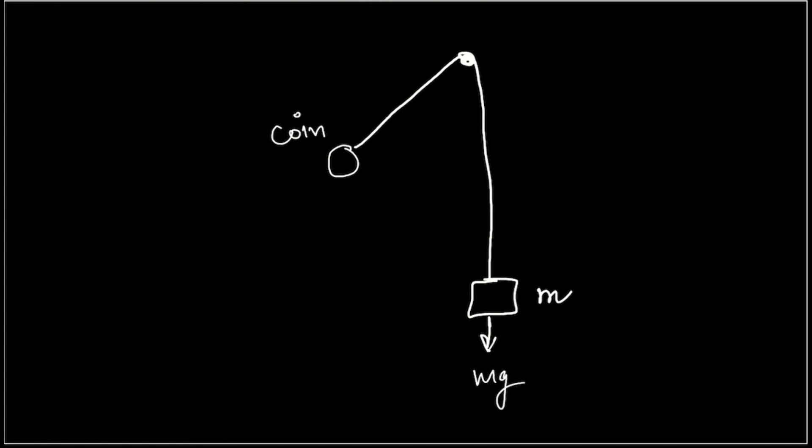Why have I taken this coin? Because as I drop it, it behaves like a simple pendulum and tries to move in this direction with velocity V vector.